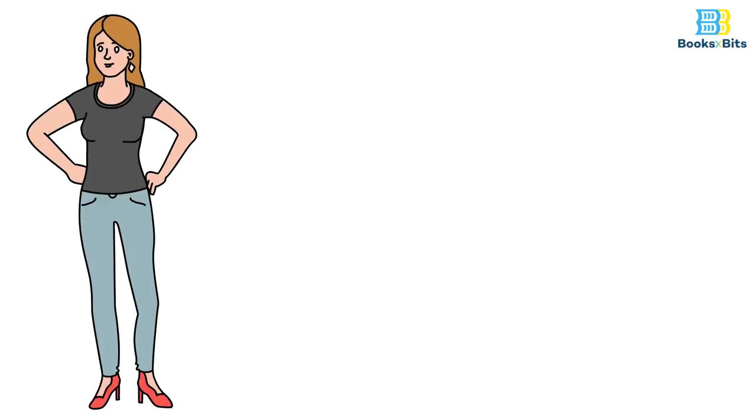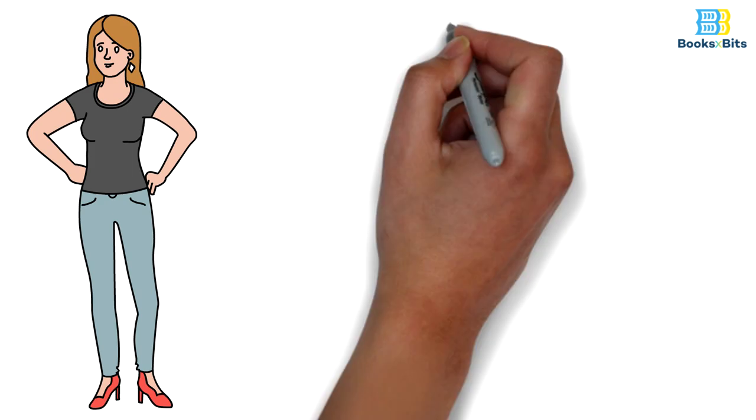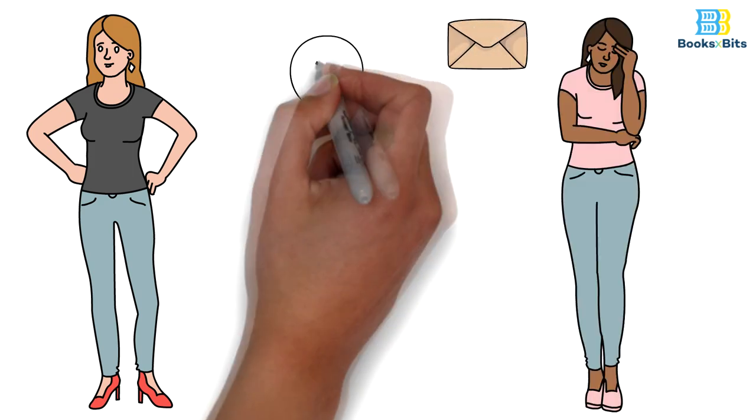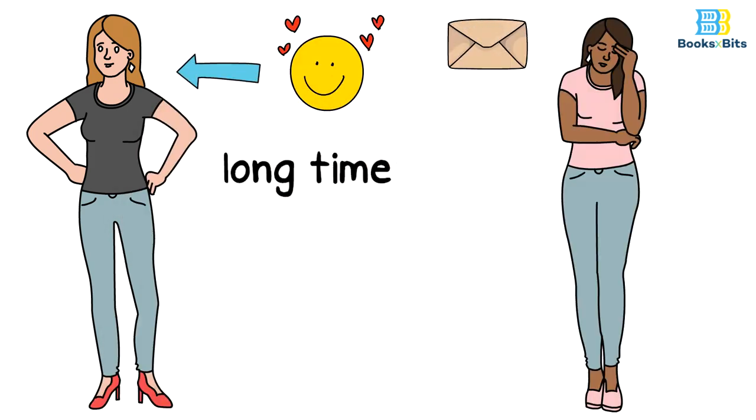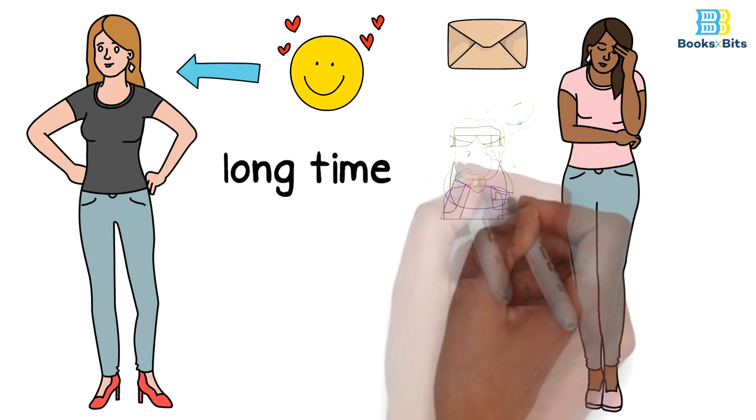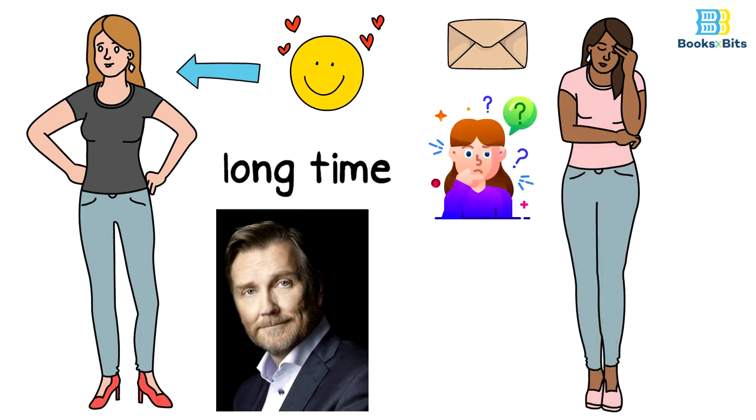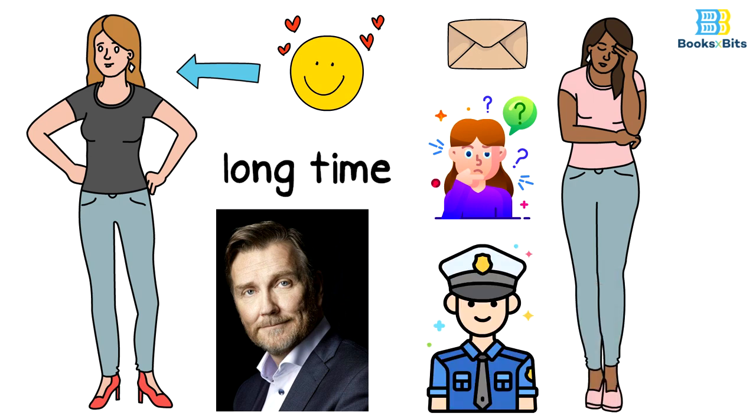The writer tells a strange story that happened to him when a girl stalked him as he always communicates with some of his readers. As a result, that girl sent a message to his fiancée telling her that they were in a relationship for a long time, which created mistrust and suspicion. This situation lasted for six months until the police stopped her.